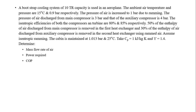Here is the statement: given a bootstrap cooling system of 10 ton air capacity is used for an aeroplane. The ambient air temperature and pressure are given. The pressure of air is increased to 1 bar due to ramming. The pressure of air discharged from the main compressor is given, and that for the auxiliary compressor is also given. Isentropic efficiency for both compressors and the turbines are given. 50 percent of the enthalpy of air discharged from the main compressor is removed in the first heat exchanger, and 30 percent of the enthalpy of air discharged from the auxiliary compressor is removed in the second heat exchanger.